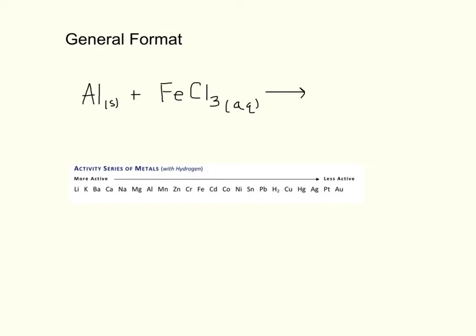So if we look at our example, we've got aluminum metal immersed in a solution of iron 3 chloride. Now to determine if the reaction is going to happen, you essentially have to just compare the two metals. So if you notice, aluminum is right here, and iron is here. So since aluminum is more active, it's going to have the ability to displace iron from the solution.